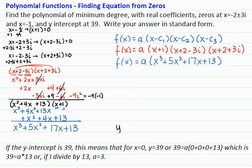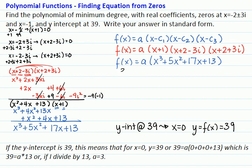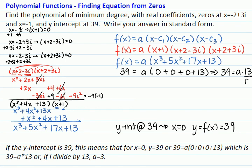Now, if the y-intercept is at 39, that means when x is equal to 0, y or f of x is equal to 39. So our equation becomes 39 equals a times 0 plus 0 plus 0 plus 13, or 39 equals a times 13. If I divide both sides by 13, I will get a equal to 3.